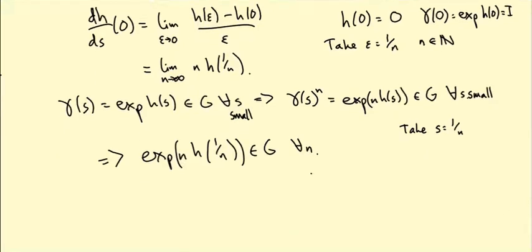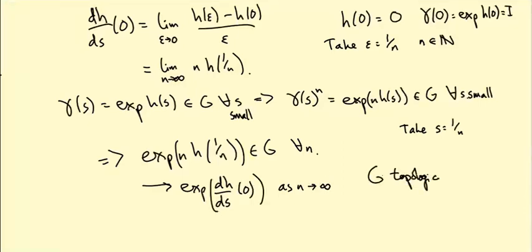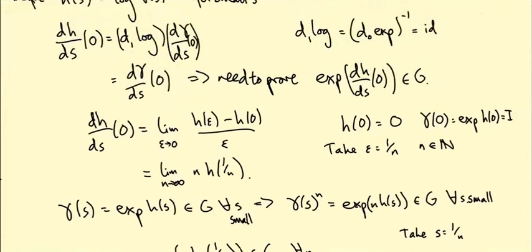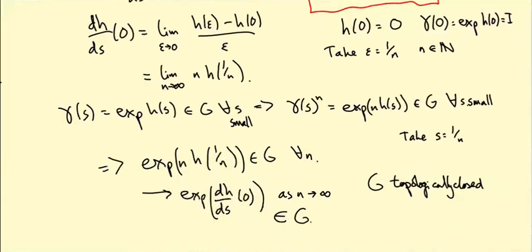And now what we can do is we can let N go to infinity. So as N goes to infinity, this matrix or the sequence of matrices converges to exp(dH/ds at s equals zero) as N goes to infinity. But G is topologically closed. So this is the key assumption that we're using. G is a topologically closed group of matrices. Therefore, this limit is also in G. And that's what we wanted to prove. If you go back, what we needed to prove by this point was that exp(dH/ds at zero) is in G. So I can put a little end of proof sign there. So you can see we're really using this fact that G is topologically closed to deduce this.